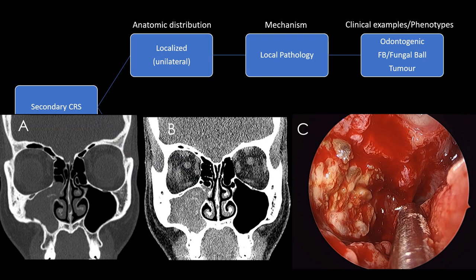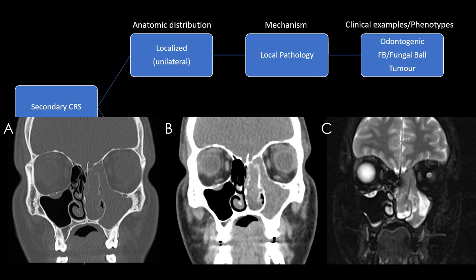Fungal ball is a good example of a localized problem in which fungal debris accumulates in the sinus, causing this situation. Whether the fungus occurs due to an inherent problem with the sinus or whether the sinus becomes dysfunctional down the track is another debate, but in essence it is a foreign body reaction to fungal material sitting in the sinus cavity. There is not the eosinophilic mucin you see in Th2 disorders — it really is more of a foreign body-type reaction, with no expansile bone change.